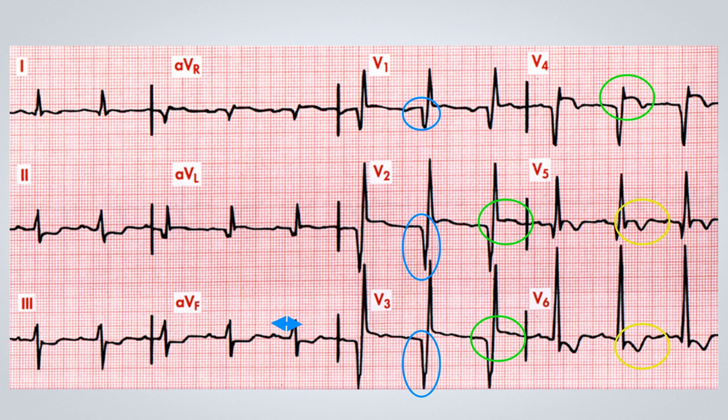A subtle Q wave in V1, mainly in AVL, indicates necrosis in the lateral wall as well, signifying anterolateral necrosis.